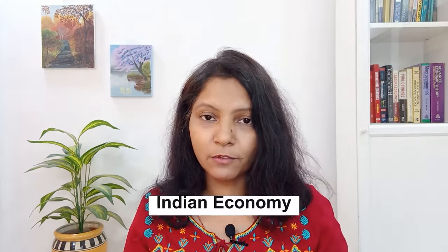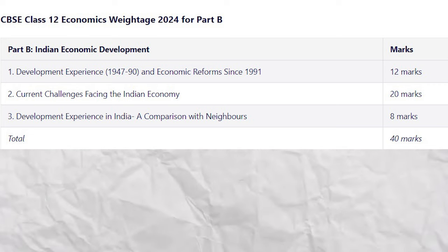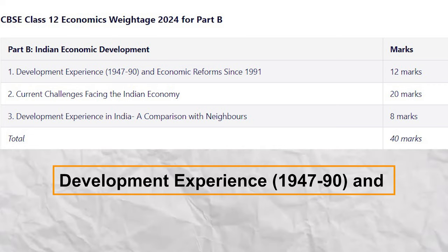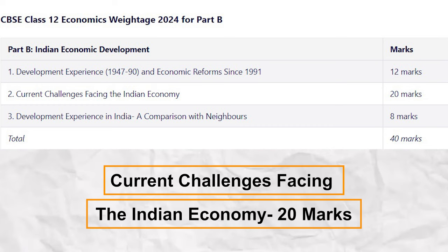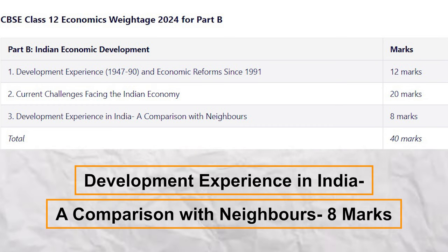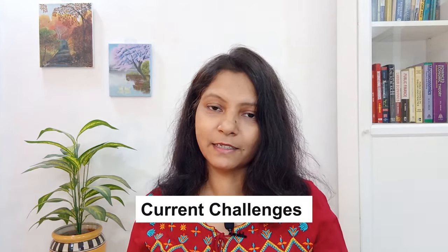The second module is Indian economy. In Indian economy, you can see the chapters and their weightages. The chapters are: Developmental Experience and Economic Reforms 1991, which is 12 marks; Current Challenges Facing Indian Economy, which is 20 marks; and Development Experience in India — a comparison of Indian and Chinese economies — which is 8 marks. These are very simple segments. Indian economy is more like a story, and if you remember the story, you will easily remember the content.